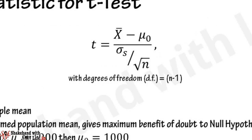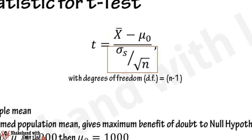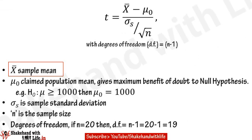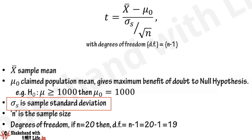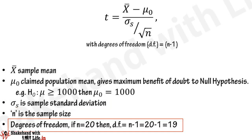Now, the test statistic used for the T-test is given by the equation: t equals x-bar minus mu-naught in the numerator, and sigma-s divided by the square root of n in the denominator, with degrees of freedom equal to n minus 1. Here, x-bar is the sample mean, and mu-naught is the claimed value of the population mean that gives maximum benefit of doubt to the null hypothesis. For example, if H-naught states mu ≥ 1000, then use 1000 in place of mu-naught. Here, sigma-s is the sample standard deviation and n is the sample size.